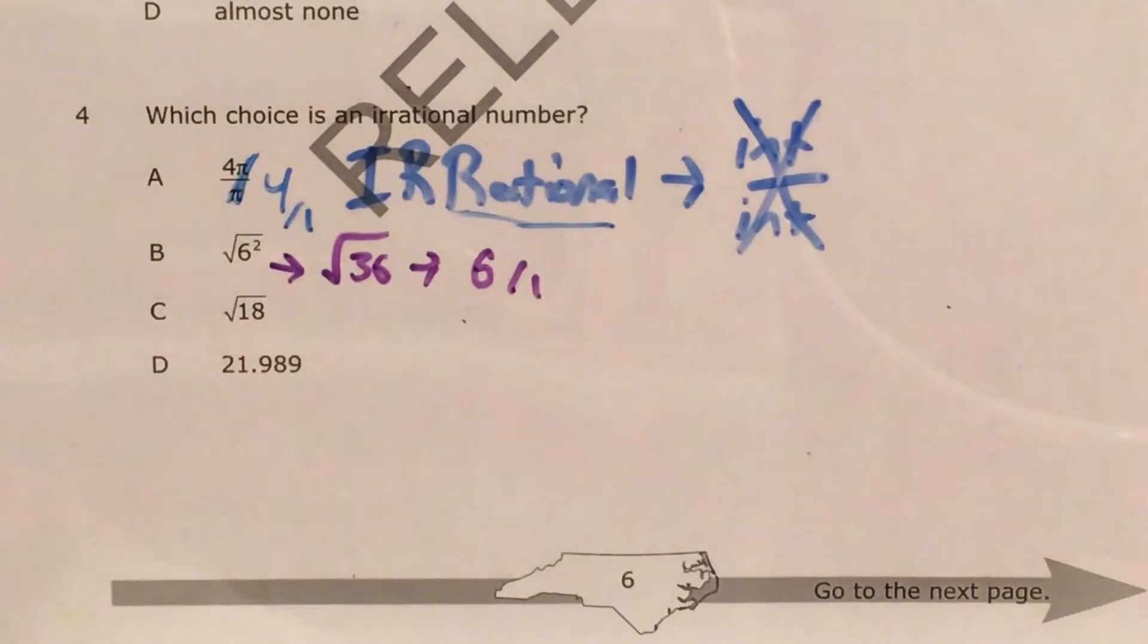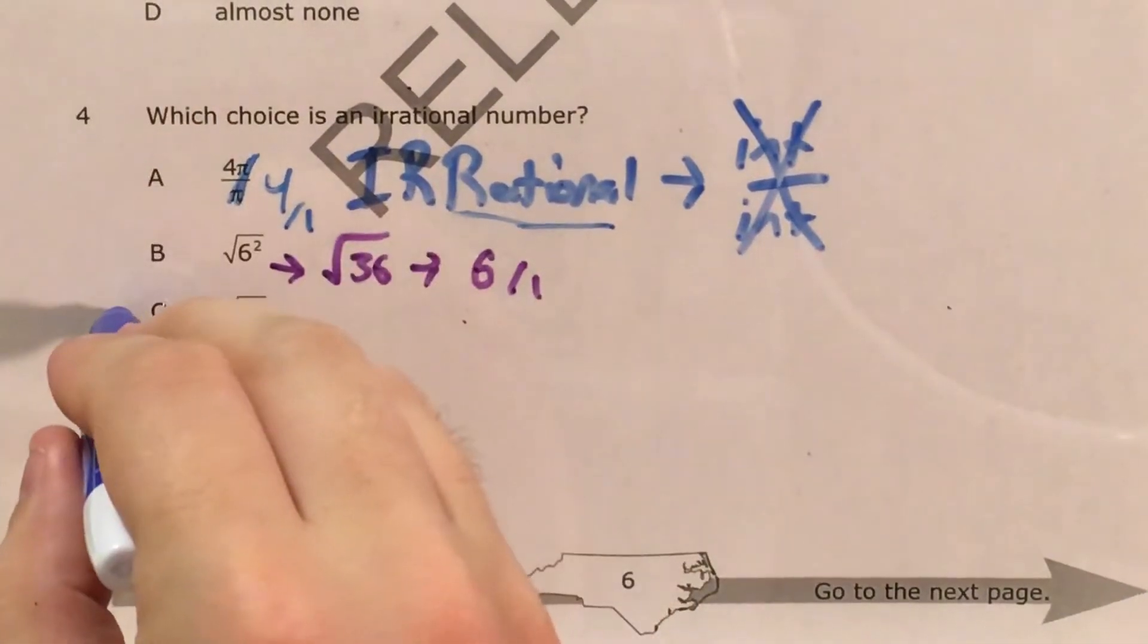For choice C, the square root of 18, this one looks a little iffy, so I'm going to come back to it.